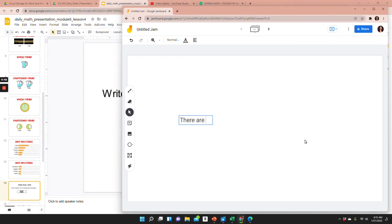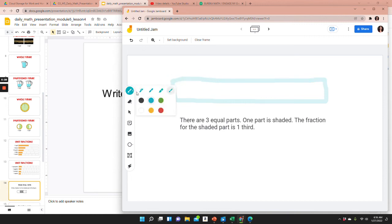There are three equal parts. One part is shaded. The fraction for the shaded part is one-third.